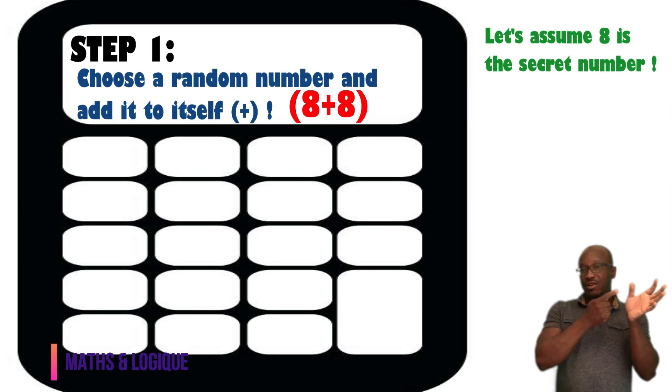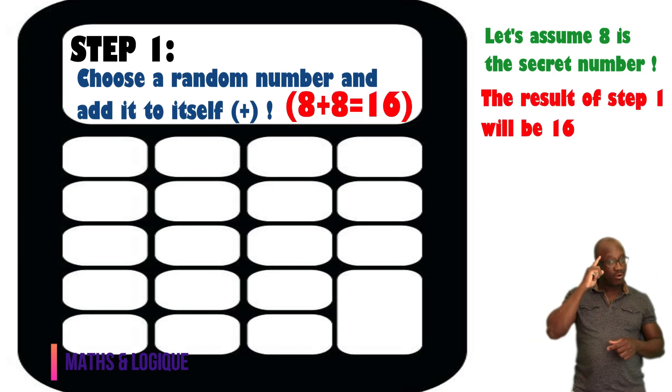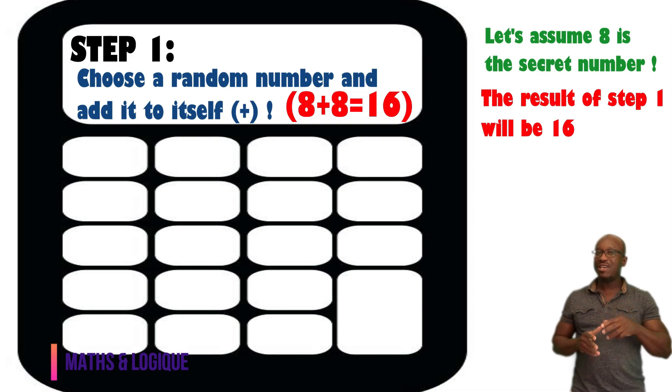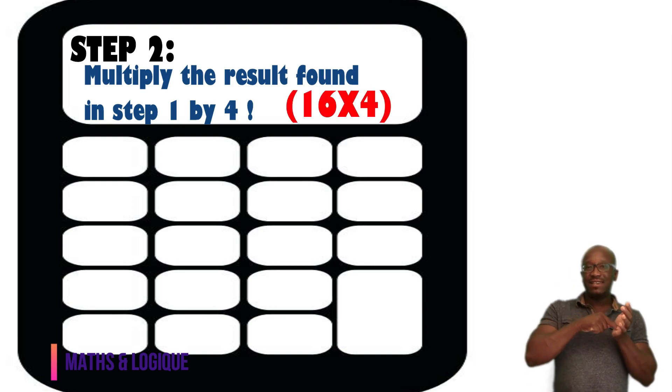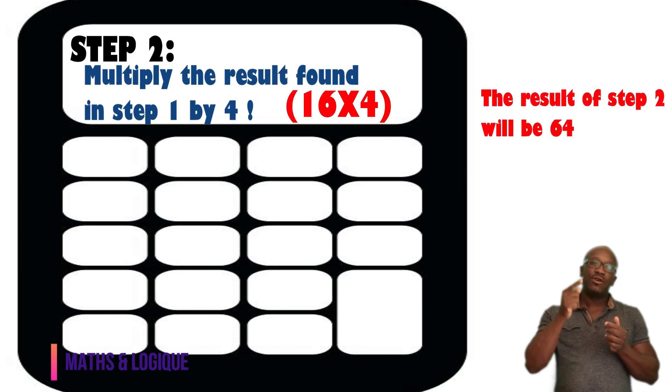You will tell him to think of a number and add this number to itself. In his calculator, he's gonna see a value. Remember, he will think of the number and not tell you what the number is. After that, you will tell him to multiply this value that he is seeing on the screen by 4.